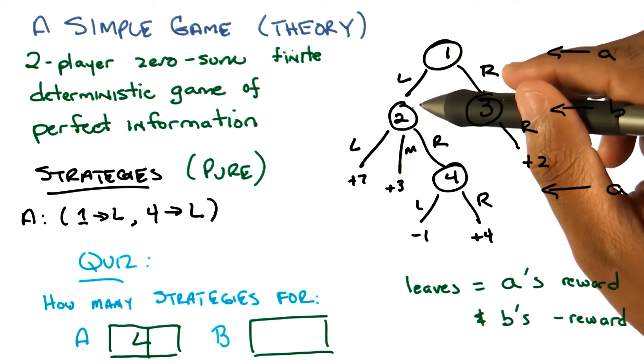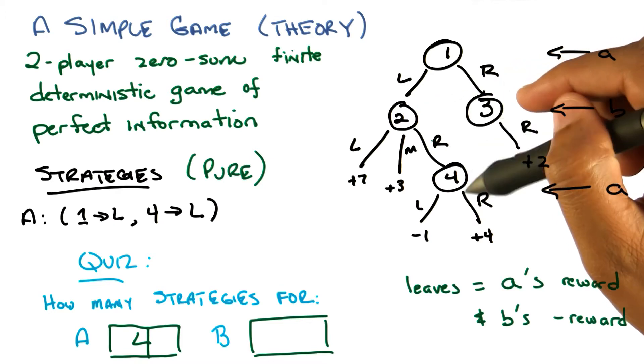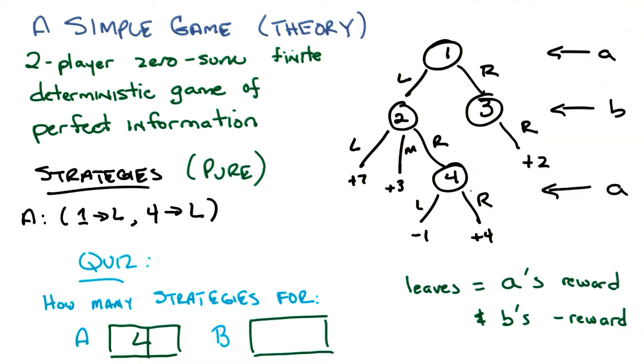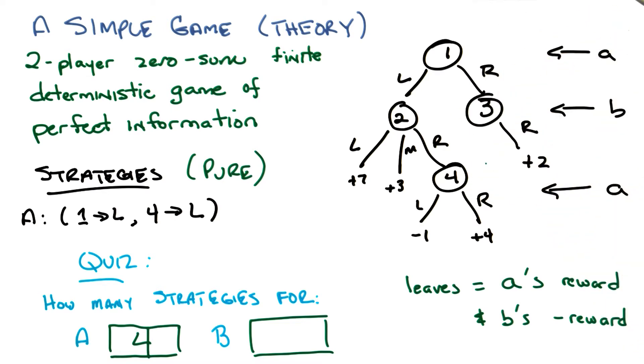Right. But if you go left, then you have this other choice to make of either going left or right. So, if you're just writing it down as a mapping from state to action, you've got two choices at state one and two choices at state four, and so that is two times two, right? You can independently choose each of those.